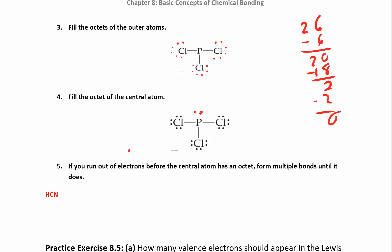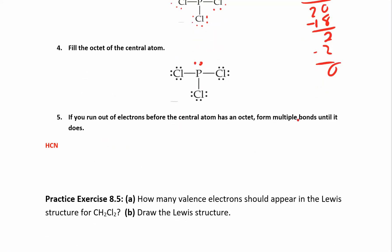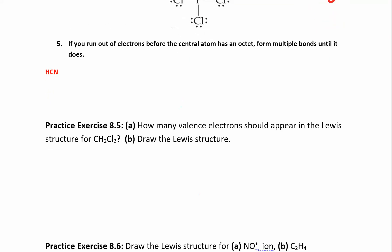Now, if you run out of electrons before the central atom has an octet, then you have to form multiple bonds — those are a little bit trickier. So if you have something like HCN, just put them in that order when connecting their bonds: H, C, then N. If you flip that around and do HNC, that's a different compound.